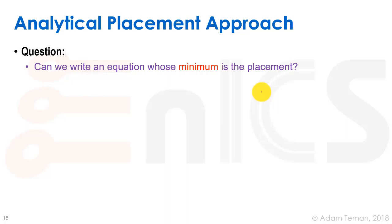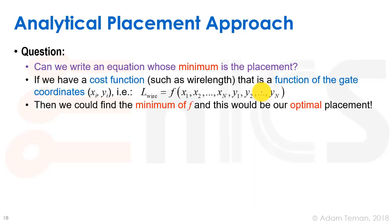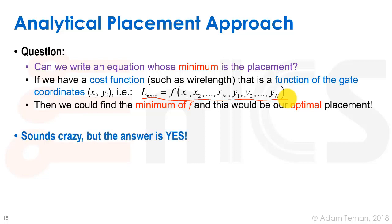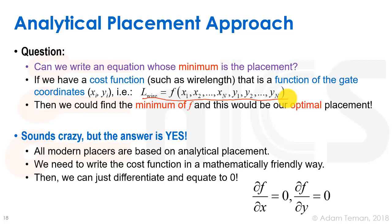Here's the analytic placement approach. We start with a question: can we write an equation whose minimum is the optimal placement? If we have a cost function such as wire length, and that cost function is a function of the gate coordinates — for each gate we have a coordinate (xi, yi) — then we can describe the total wire length as some function of all the x's and y's of all our gates. If we had that, we could just find the minimum of f, and this would be our optimal placement.